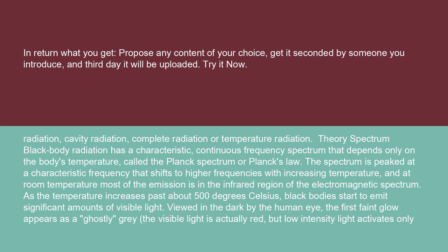Black body radiation has a characteristic continuous frequency spectrum that depends only on the body's temperature, called the Planck spectrum or Planck's law. The spectrum is peaked at a characteristic frequency that shifts to higher frequencies with increasing temperature, and at room temperature most of the emission is in the infrared region of the electromagnetic spectrum.